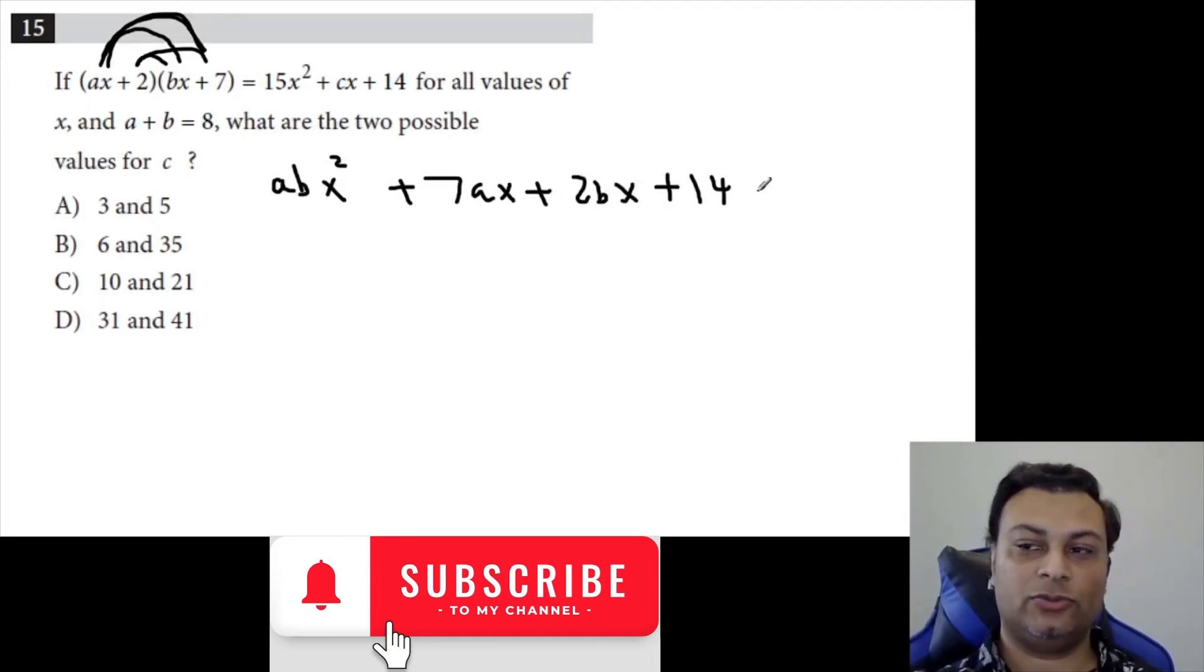And that's going to be equal to this, 15X squared, plus CX plus 14. Okay, and if these are equal for every value of X, that means everything has to match up appropriately. You see the plus 14 there? It matches up with that plus 14, so everything's good so far.